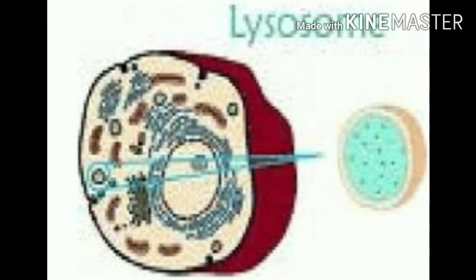And when the transformation of a tadpole into a frog is going on, we know that the tail and gills of the tadpole gradually disappear during this process. That is also digested by the lysosomes, and so it also helps in the metamorphosis of the tadpole into the frog.